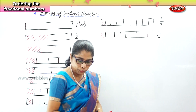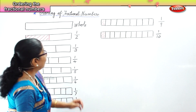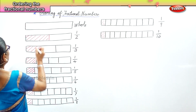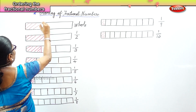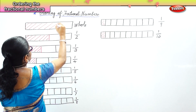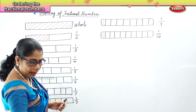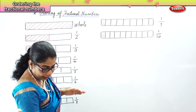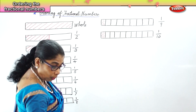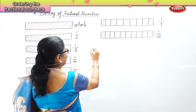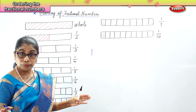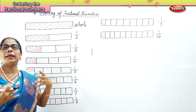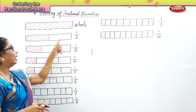So now let us look at all that we have done — ordering of fractional numbers. This is one whole, so I am going to color that one whole. In fraction we call it one by one. Now we have half. Let us look at this carefully — we have this one whole.